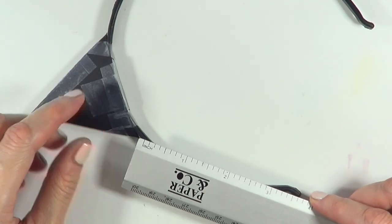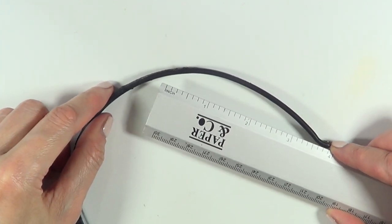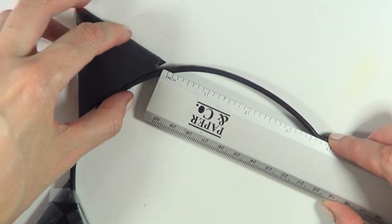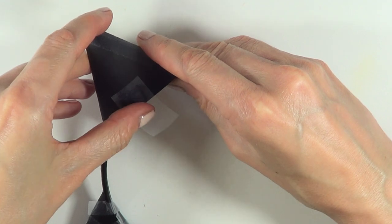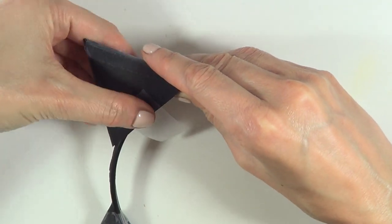I'm going to measure this so I can have a symmetrical headband and know where to place the other ear. Once I figure out where exactly to put it, I'll tape it again.